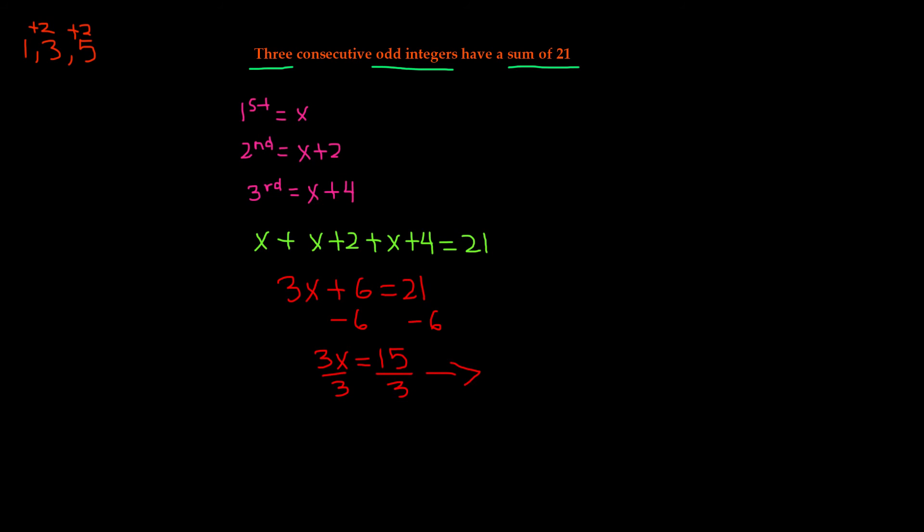Now if we replace this value, we will get the first consecutive integer as 5, second as 5 plus 2, which is 7, and third as 7 plus 4, which is 11. No, I'm sorry, 5 plus 4, which is 9. Remember, you have to keep the value of x. I accidentally replaced 7 plus 4, which had given me the wrong answer. So you have to replace the value of x into these. 5 plus 4, which is 9.